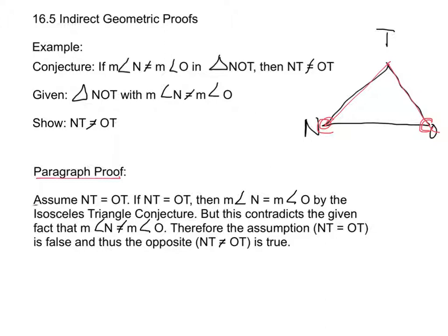We start by assuming that NT equals OT — the opposite — for our indirect proof. If segment NT equals segment OT, then the measure of angle N would equal the measure of angle O by the isosceles triangle conjecture. But this contradicts the given fact that the measure of angle N does not equal the measure of angle O. Therefore, the assumption that NT equals OT is false, and thus the opposite — that NT does not equal OT — is true.